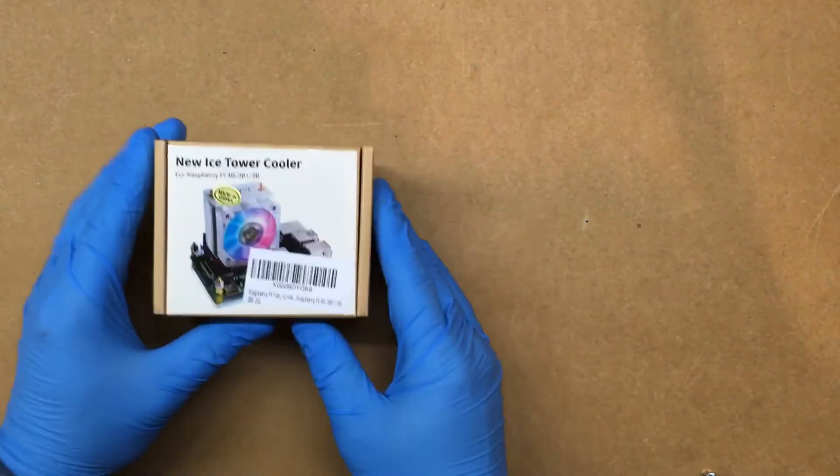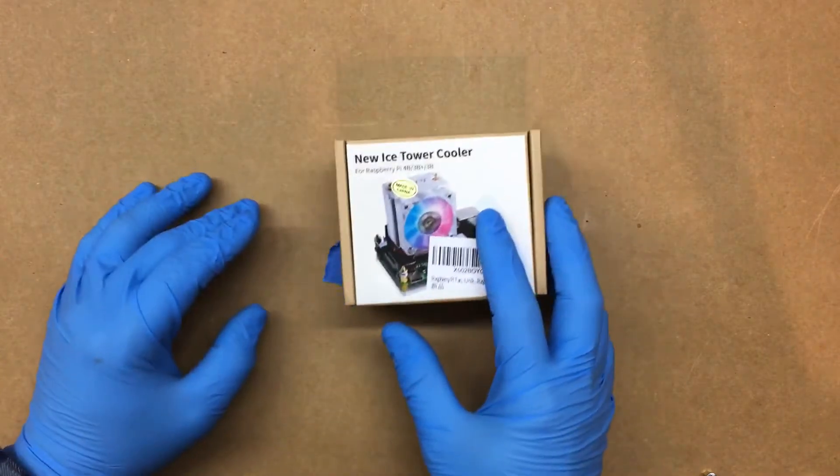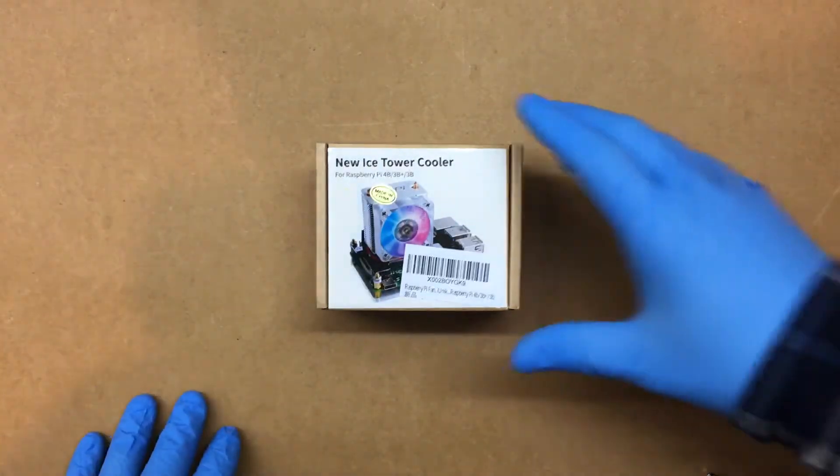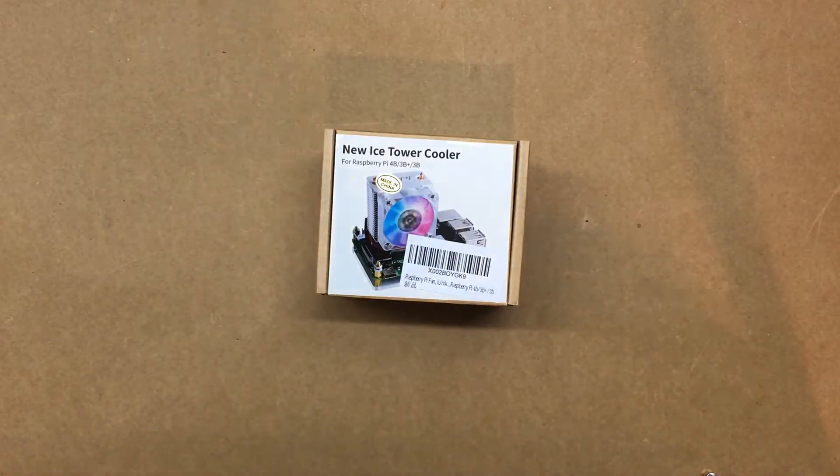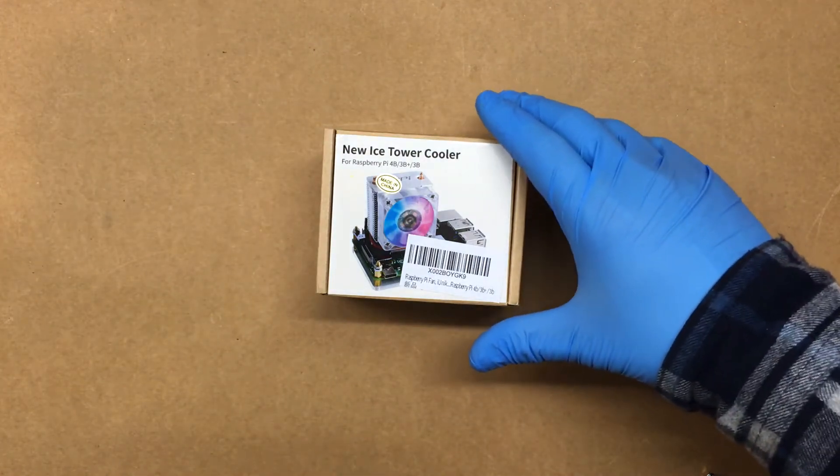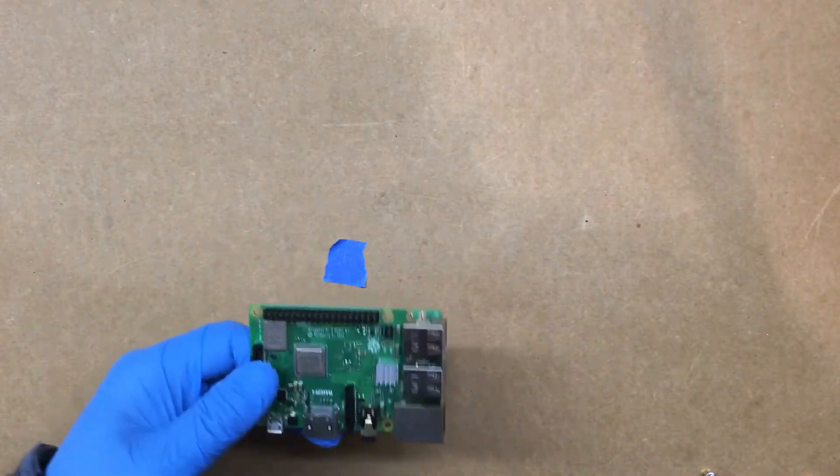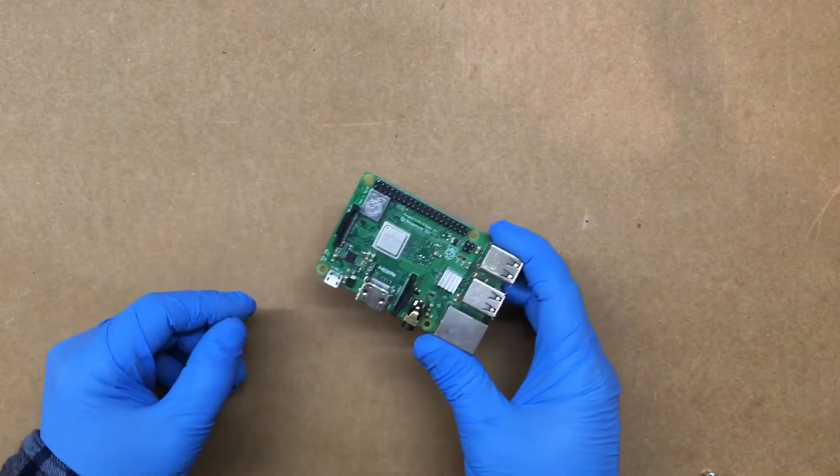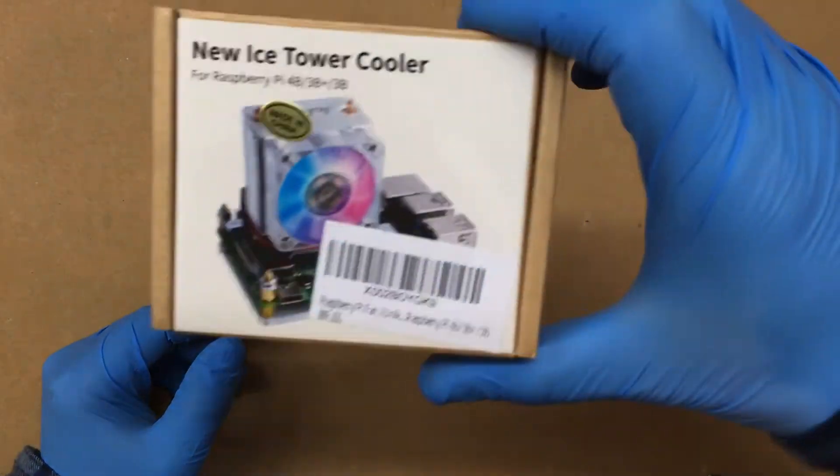Alright, Fuzz Pie Guy here. I went ahead and ordered up one of these tower coolers for the Raspberry Pi. Everybody's gone nuts over heat sinks and fans for the Raspberry Pi, especially the 4. I don't have a 4 at the moment, but I do have a 3B+, and if you see here, this is supposed to fit the 4B, 3B+, and the 3B.